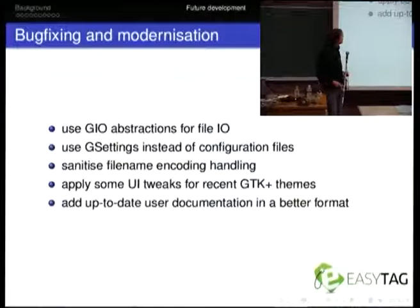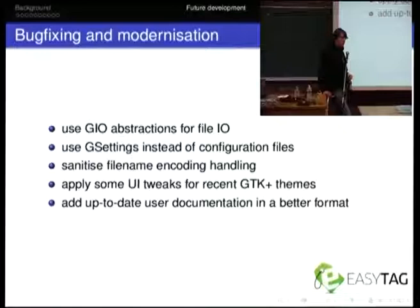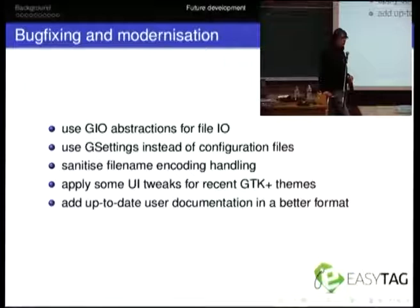Some future things we'd like to do: EasyTag doesn't really work if you mount a file system like a CIFS file system and want to access files and edit tags on it. You can't really do that because it's using all the POSIX calls for opening files. This made porting to Windows a little bit awkward, though it kind of works. It would be nice to use the nice abstractions we have inside GLib and GIO for that. I've started doing that for a few things like temporary files, and that's going to take a long while but would really help.